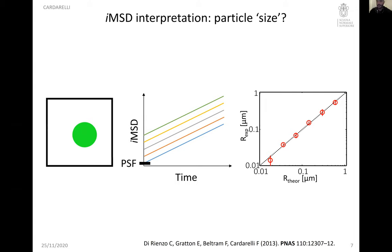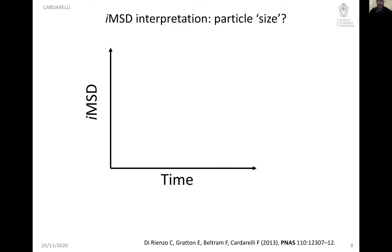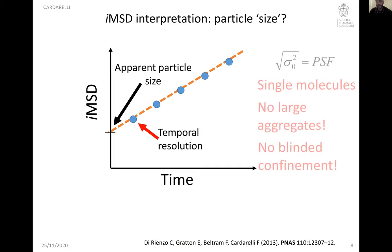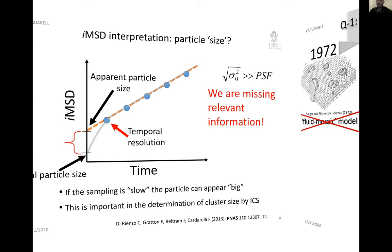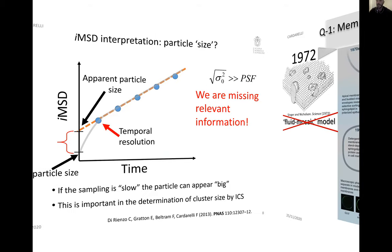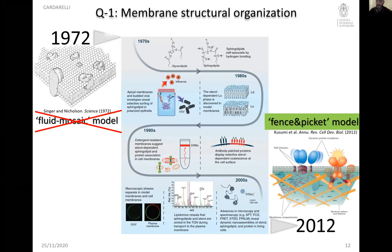These are in silico tests of the validity of the analysis. Let's go to real applications — the first is membrane structural organization. In the last 40 years our comprehension of the structural organization of the membrane has changed from the fluid mosaic model of 1972 by Singer and Nicholson to the current view based on Kusumi and many other researchers' work: the so-called fence and picket model. Molecules are confined by the actin meshwork and also confined within the so-called lipid rafts. Things are more complex than expected.